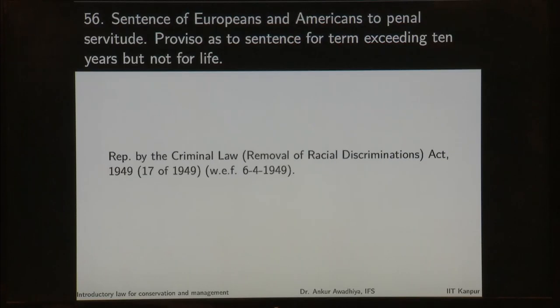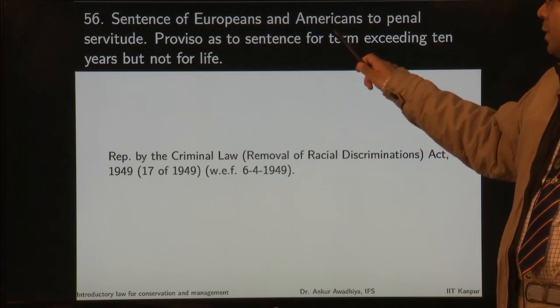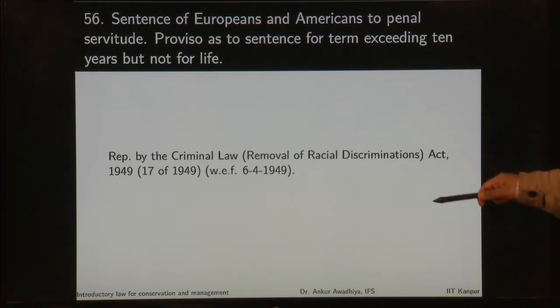Section 56 — sentence of Europeans and Americans to penal servitude. Earlier the IPC, as made by the British, had separate provisions for sentencing of Europeans and Americans. But this section has now been repealed by the Criminal Law Removal of Racial Discrimination Act 1949. So now it is immaterial whether the person is Indian, European or American — if the case comes under the purview of the IPC, everybody is treated as equal.